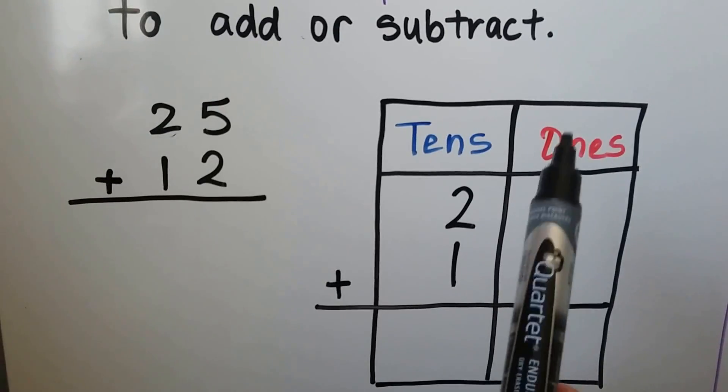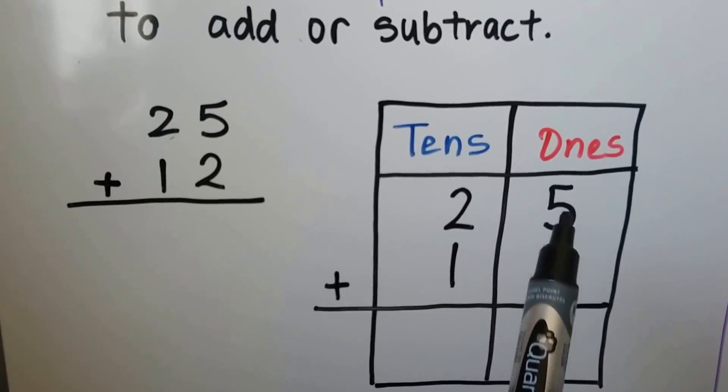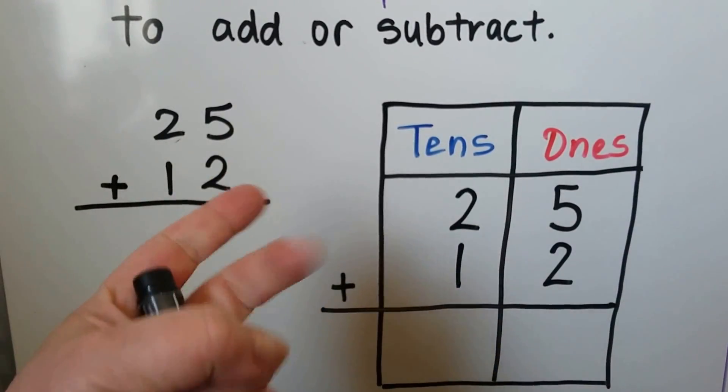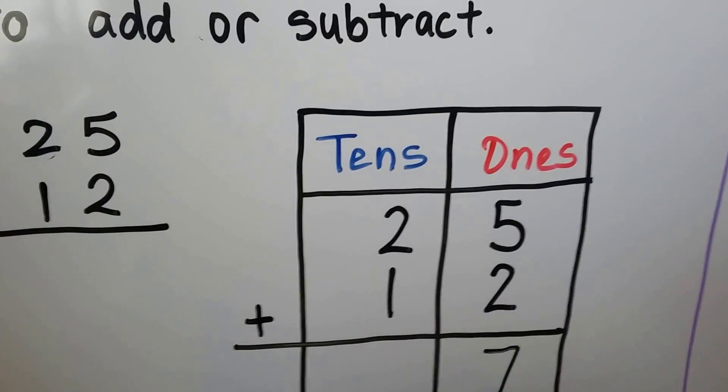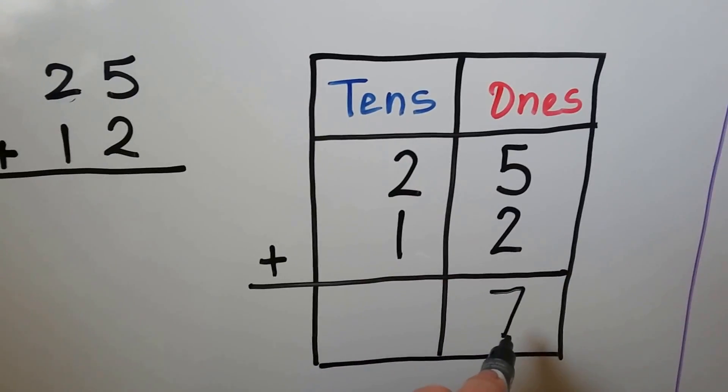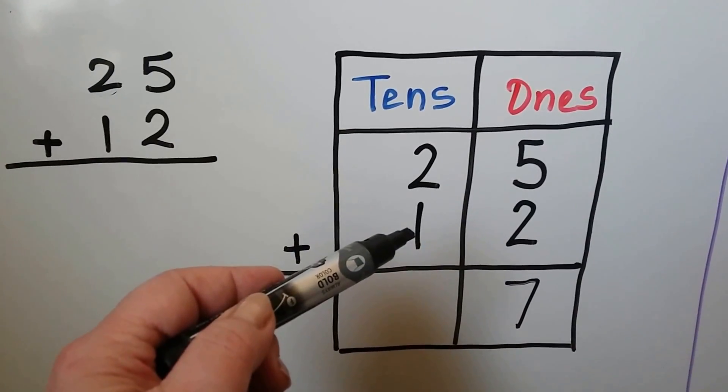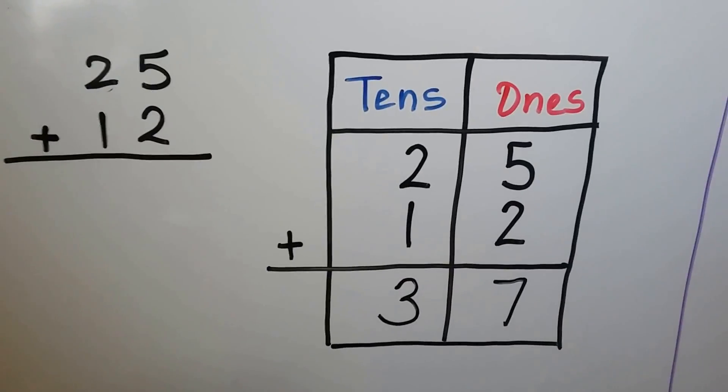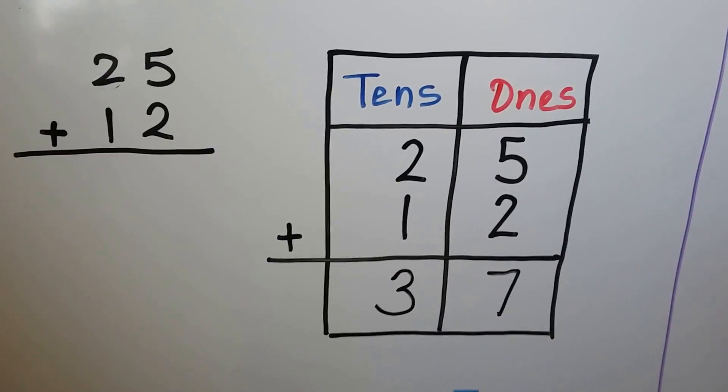We start in the ones place. We always start in the ones place first. We add the 5 plus 2. 5, 6, 7. We write our answer, the sum, down below it in that place value. Then we add the tens. 2 plus 1 more is 3. That means 25 plus 12 has a sum of 37.